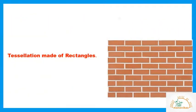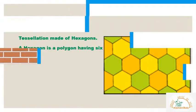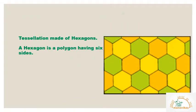This tiling pattern is an example of tessellation made by using rectangles. This is an example of tessellation made by using hexagons. A hexagon is a polygon having six sides.